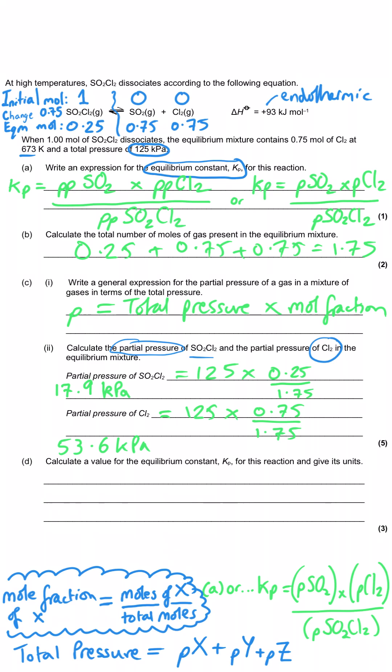And then last of all, they've asked us to calculate a value for Kp for the reaction and give its units. So the value of Kp is nice and straightforward, because we've already written the expression up at the top. So we have to do our 53.6 for the sulfur dioxide, 53.6 for the chlorine, divide it by 17.9, and that gives us 161. In terms of the units, well, what we have to do there is we have to take the units of the partial pressure of sulfur dioxide, kilopascals. Then chlorine's units are also going to be kilopascals. And then the sulfuryl chlorides will also be kilopascals. And so then when we simplify this, one kilopascals from the top cancels out a kilopascals from the bottom. And so we're left with kilopascals on the top. And that will be the units for Kp in this situation. So one mark for the units, one mark for the final answer, and one mark for the expression for Kp with the numbers substituted in.